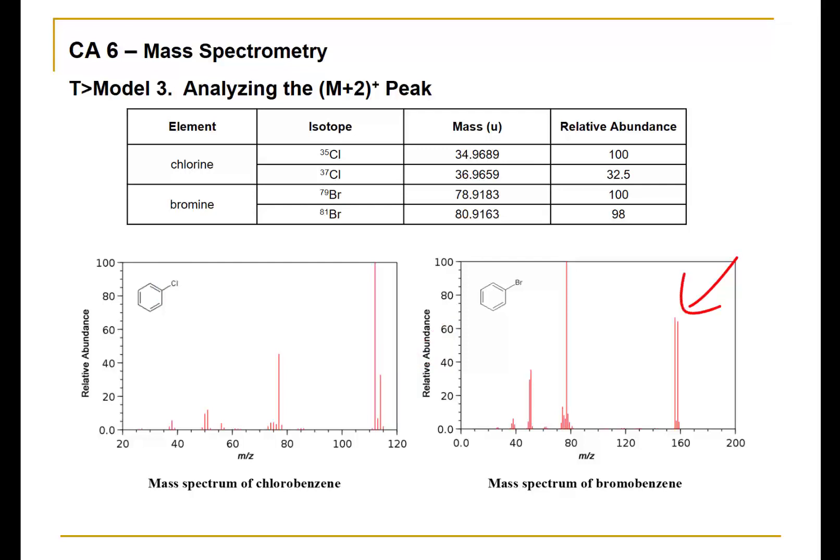Whereas in the next example, when you have what appears to be two molecular ions separated by two atomic mass units of equal abundance, that's a telltale sign of having bromine present.